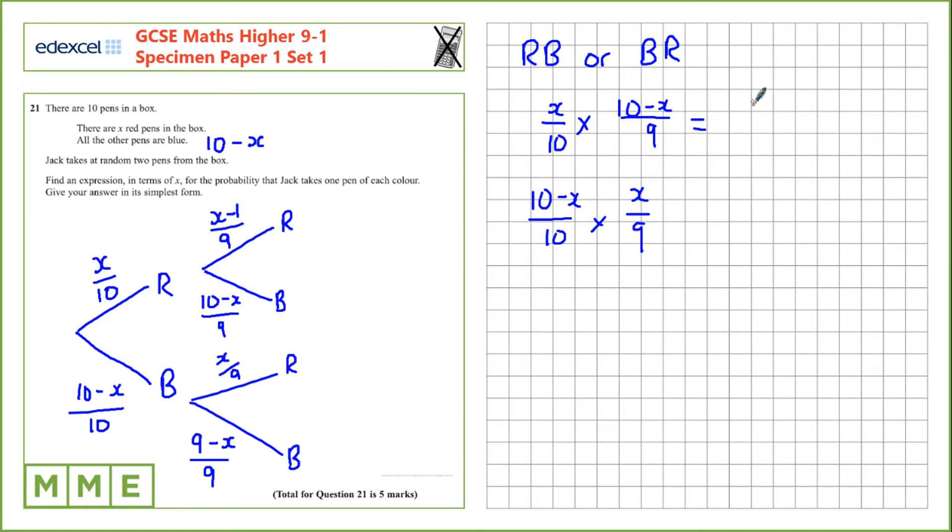So x times 10 minus x will be written like that, and that's over 10 times 9, which is 90. And for this one we have x times 10 minus x, also over 90. So we need to add these two together to get our final probability, so we're going to have two lots of the same fraction. So that's 2x times 10 minus x over 90.